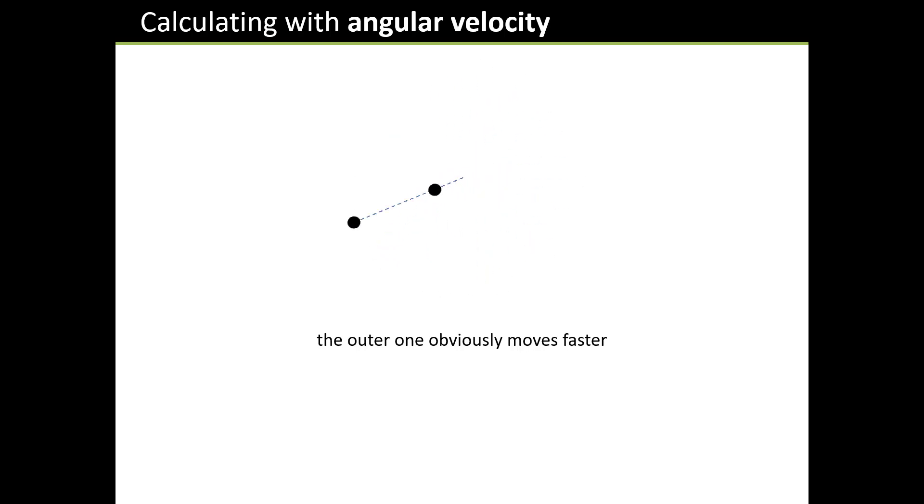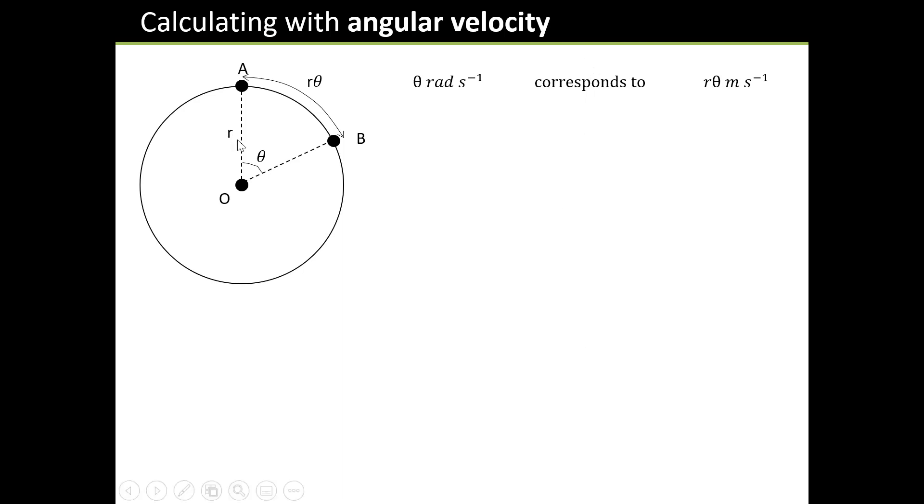So let's calculate the relationship between angular velocity and the speed in terms of meters per second. Here's a circle. Let's assume that our particle has moved from a to b in one second. Now θ radians in one second is going to be the same as rθ meters per second, provided we measure this r in meters. That's the whole point of radians.